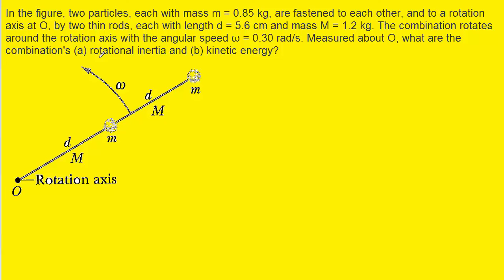Before we begin to calculate the rotational inertia in Part A, it's going to be useful to label the four objects. We have the rod that is closest to the rotation axis, which we can call Object 1. We then have the particle, which we'll call Object 2. We have a second rod that we'll call Object 3, and then a second particle, which we can call Object 4.